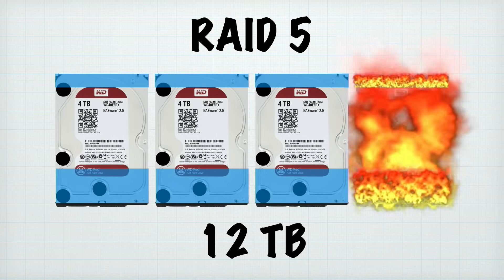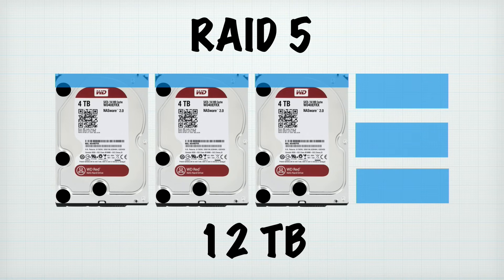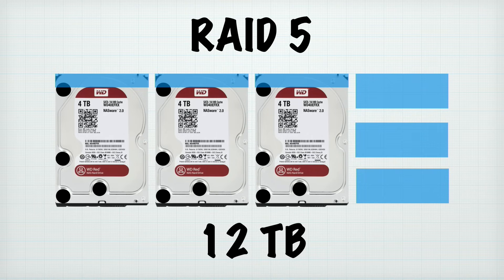If one of the drives fails, you can grab those parity partitions and reconstruct the data that was on that disk. However, when you're in that degraded mode it runs a lot slower, you're not properly protecting new data being written, and you run the risk of another drive failure and losing everything. So there is additional risk here, although you do gain some space over the next mode. Performance-wise, reads are better than writes because writing requires calculating the backup parity across the other disks — especially with lots of small files. RAID 5 is best tuned for reading data and media playback, less so for writing.